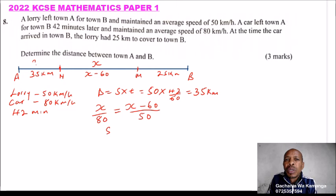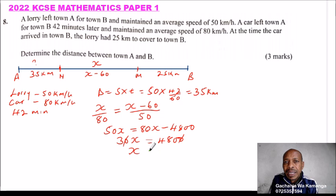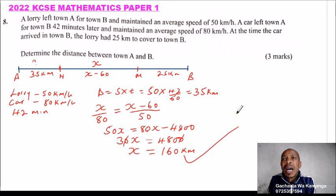So we cross multiply, we get 50X equals 80X minus, 80X multiplied by 60, that will give us 4,800. We take 50 to this other side. So we have 80X minus 50, that is 30X equals 4,800. You divide by 30, and you'll be able to get X is 160 kilometers. So that is the distance between town A and town B.